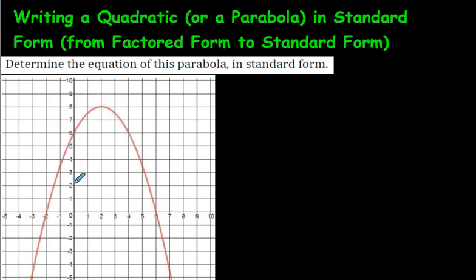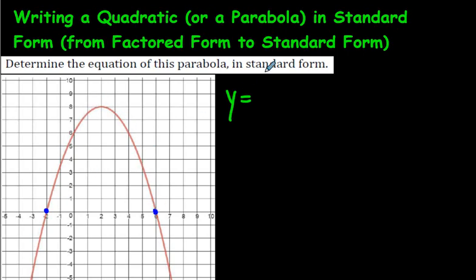We stop here because we now have the equation in standard form: 3x squared minus 18x plus 15. Now let's look at a question where you're given a parabola graph and asked to determine its equation in standard form. The easiest way is to start with the two x-intercepts or zeros, and write the equation in factored form first. We don't know the value of a yet, so we'll just write the letter a.